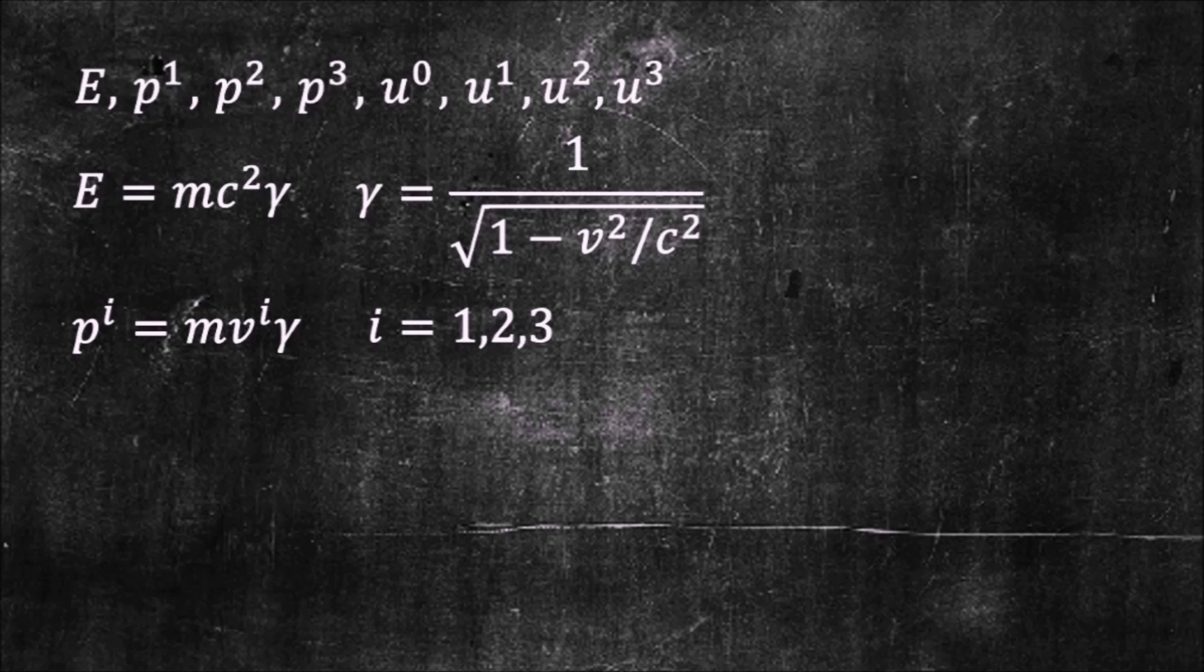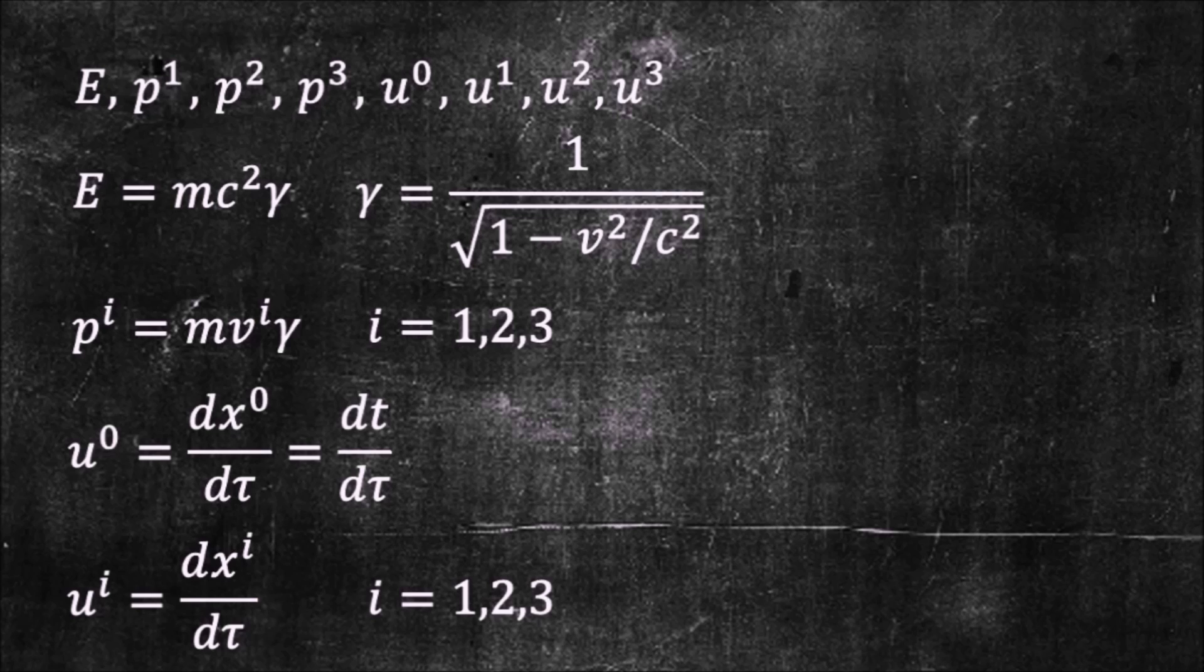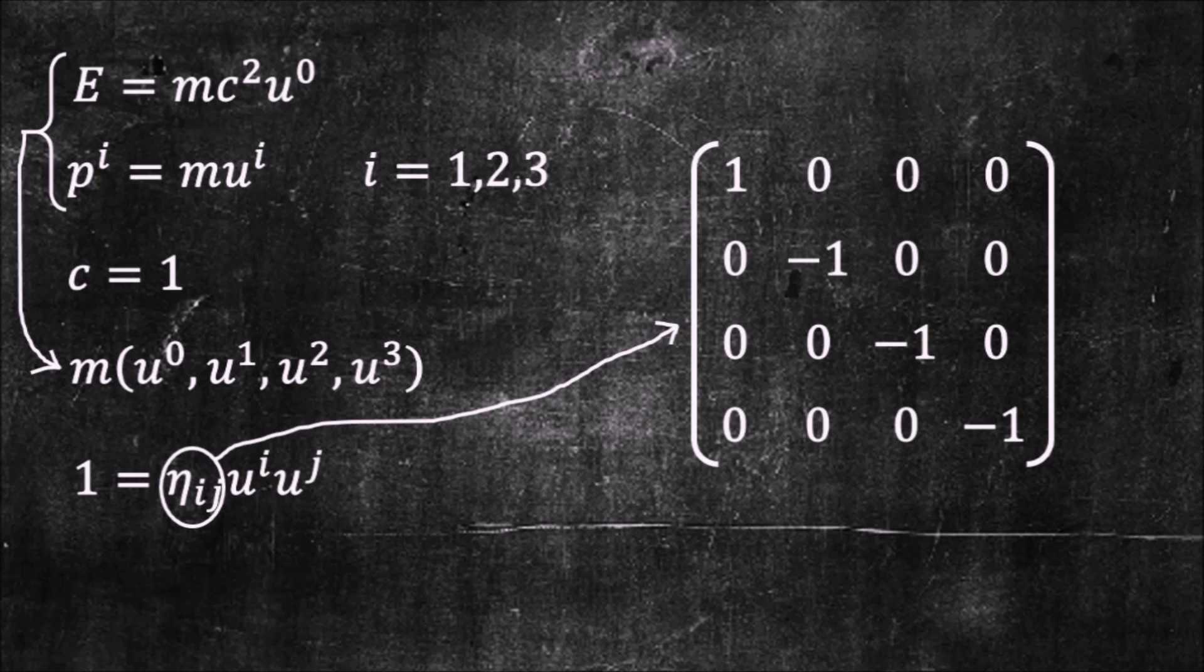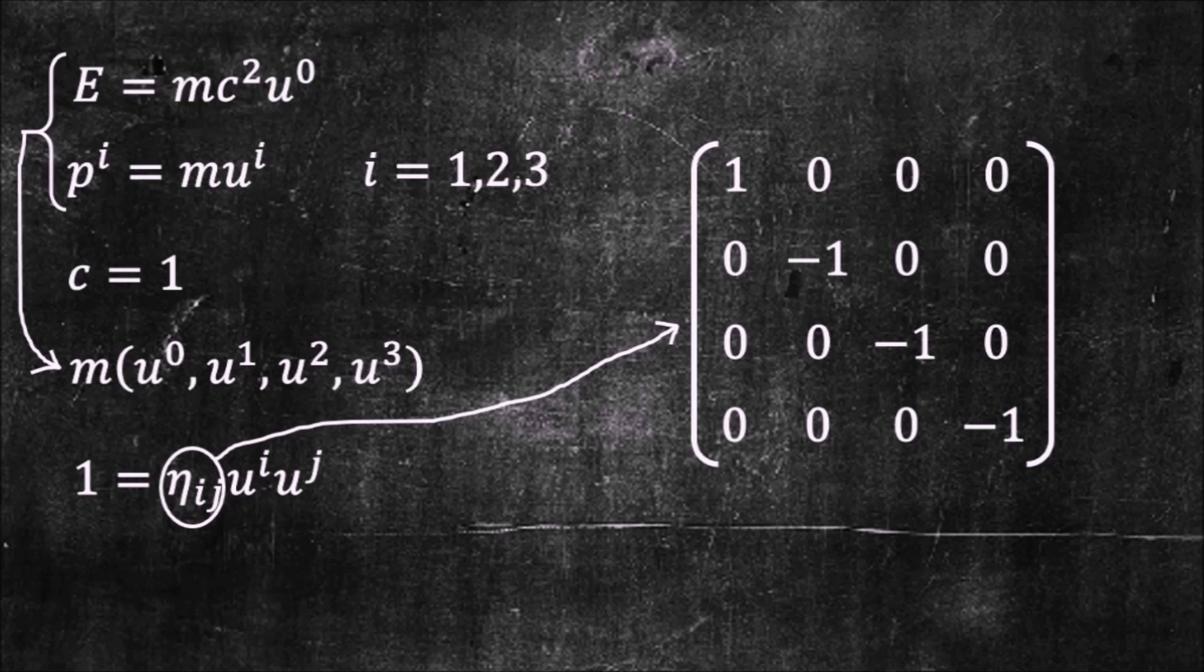Before we continue, let's recall some basic facts about special relativity, namely the relation between energy, momentum and the unit tangent vector u. The energy and momentum of a moving particle are given by these formulae. The components of the unit tangent vector are by definition dx by d tau, where d tau is related to dt through the gamma factor. If we choose to work in units where the speed of light is 1, the energy and momentum can be written as a 4 vector. Recalling this identity, where eta is the flat spacetime metric, we recover the well-known relation between energy and momentum.